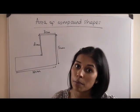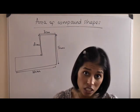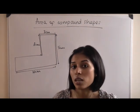A compound shape is a shape made up of more than one rectangle. There will be instances where you will need to work out the area of compound shapes.